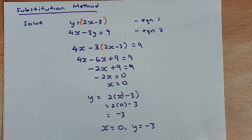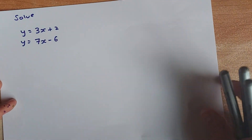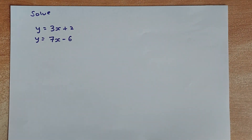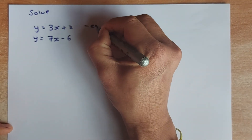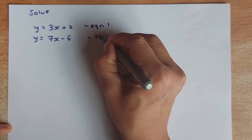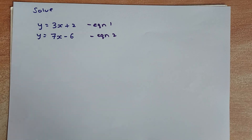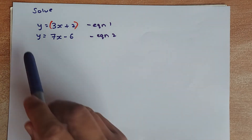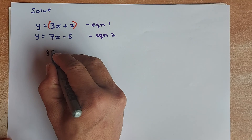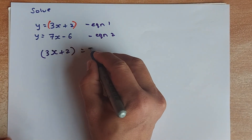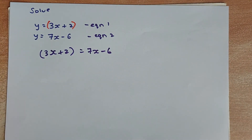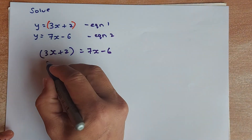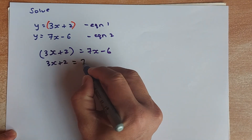The last example is the type of question you will encounter in linear algebra. We have Y equals 3X plus 2 as equation 1, and Y equals 7X minus 6 as equation 2. We substitute: wherever we see Y in equation 2, we replace it with 3X plus 2. So 3X plus 2 equals 7X minus 6.